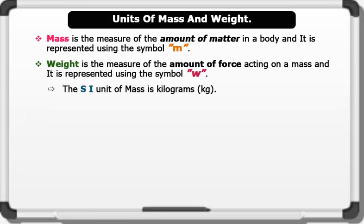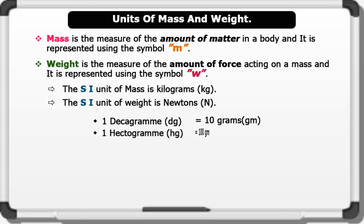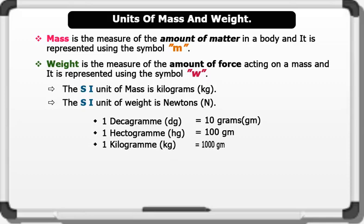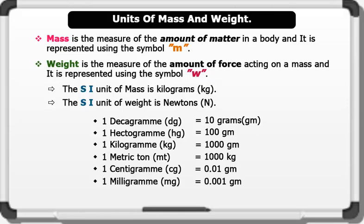The SI unit of mass is kilograms. Though we usually talk about weight in kilograms, the SI unit of weight is newtons — the units of force. Other derivations of the unit of mass include: 1 decagram equals 10 grams; 1 hectogram equals 100 grams; 1 kilogram equals 1000 grams; 1 metric ton equals 1000 kilograms; 1 centigram equals 0.01 grams; 1 milligram equals 0.001 grams.